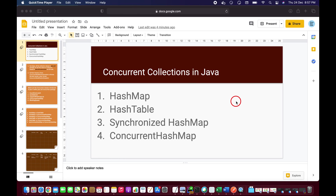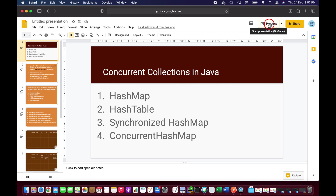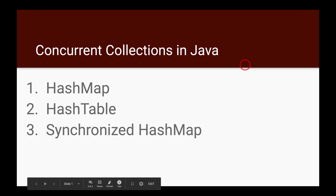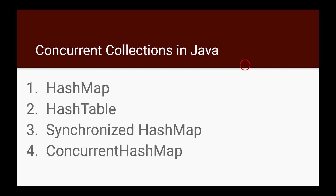Hello guys, welcome back. Today I'm going to talk about concurrent collections in Java. We have different types of concurrent collections: HashMap, HashTable, synchronized HashMap, and ConcurrentHashMap. If you attend any interview, the interviewer may ask about the differences between HashMap vs HashTable, or synchronized HashMap vs ConcurrentHashMap.